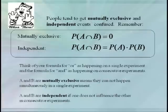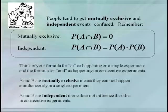People tend to get mutually exclusive and independent events mixed up. Mutually exclusive means events cannot happen simultaneously in a single experiment — like selecting an ace and a jack on a single draw — so the probability of A and B is zero. Independent means one event does not affect the other in consecutive experiments — like rolling a single die — so the probability of A and B equals the probability of A times the probability of B, which is typically not zero.